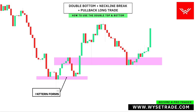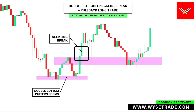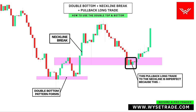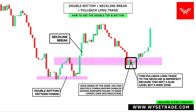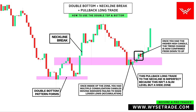Double bottom pattern. Neckline break here. This pullback long trade to the neckline is imperfect because this isn't a slim level but a wide zone. Once inside of the zone, you had multiple consolidation candles moving sideways, failing to make lower lows. And once you had the higher high candle form, the trend change is confirmed.